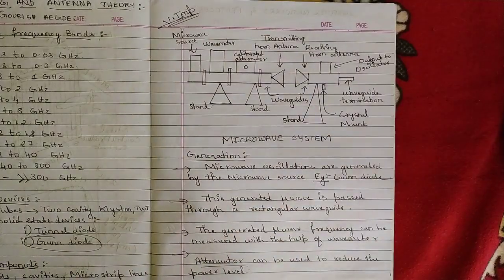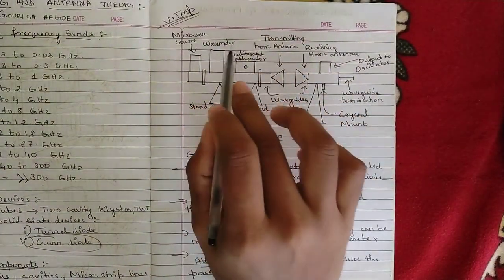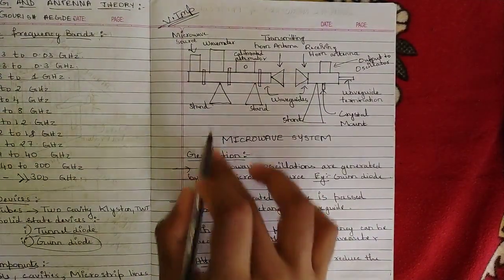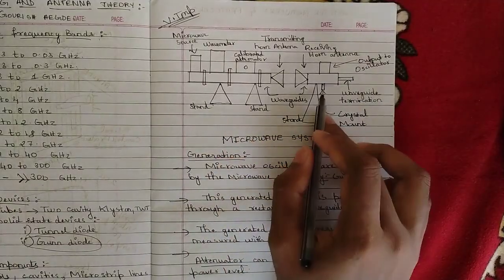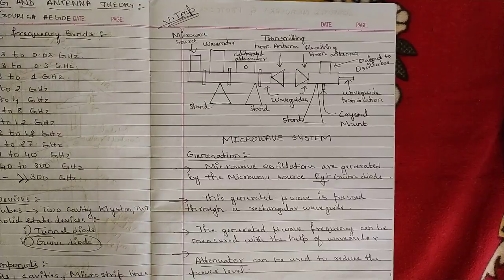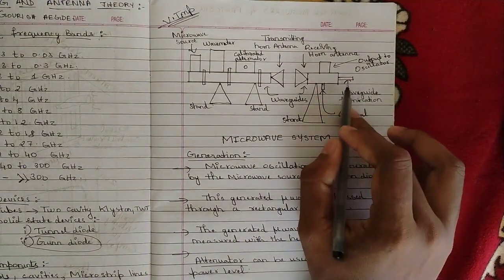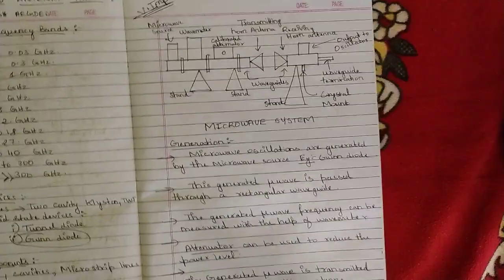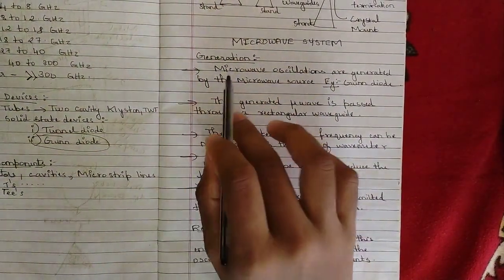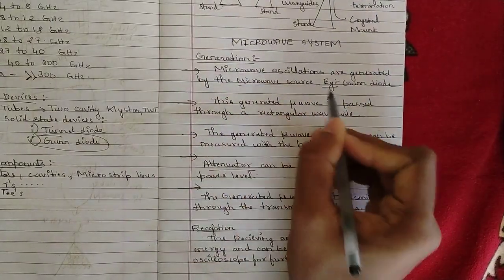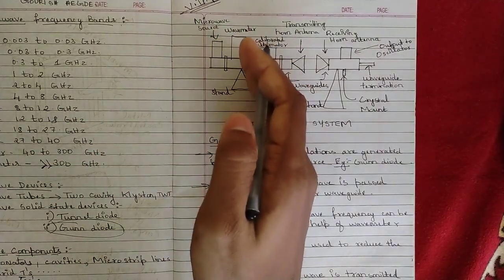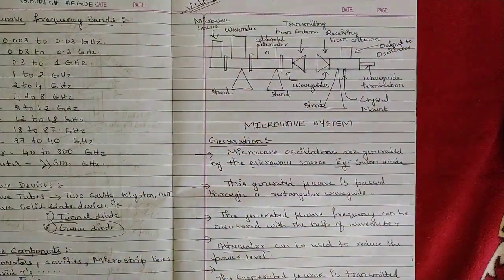The calibrated attenuator passes only the required signals. A wave meter checks the wavelength and wave propagation characteristics. A crystal mount is used for thorough signal analysis. The wave guide termination is where the wave is completely propagated and provided to the output oscilloscope. The Gunn diode is a key example of a microwave system source.